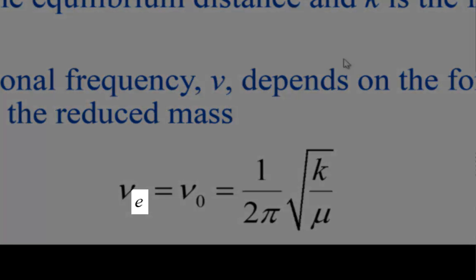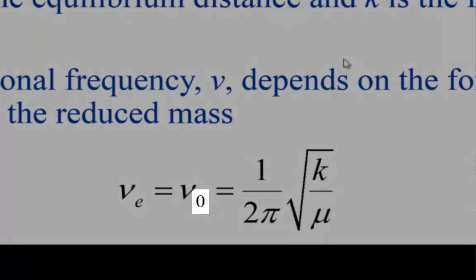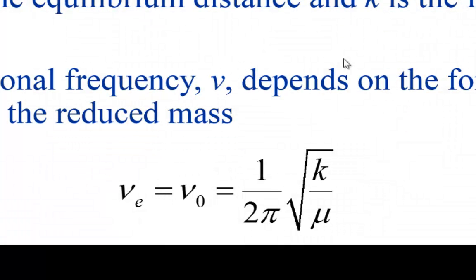The subscript e refers to equilibrium. If the subscript is a number — say 0, 1, or 2 — it means you are in the v equals 0, 1, or 2 vibrational level, where v is the vibrational quantum number. Note that as the force constant gets bigger, meaning the restoring force is larger, the frequency would be higher. It is also inversely proportional to the square root of the reduced mass — if the masses are heavier, the frequency would be lower for a given force constant. So the form of this expression makes sense.